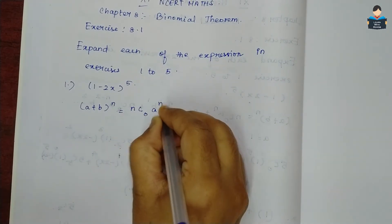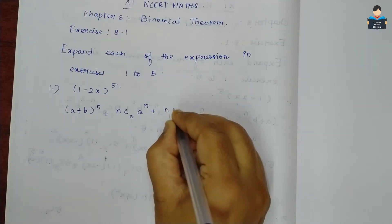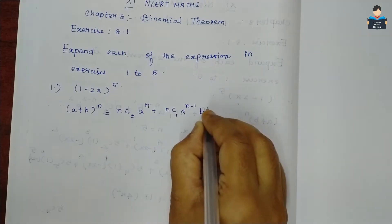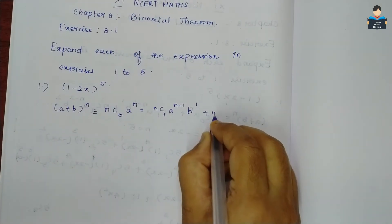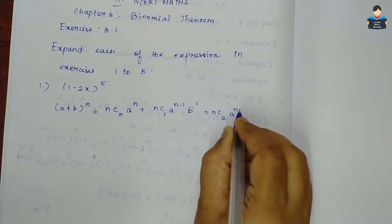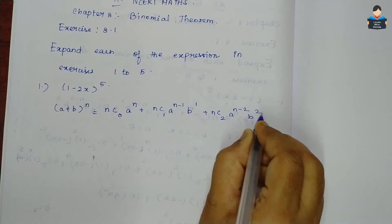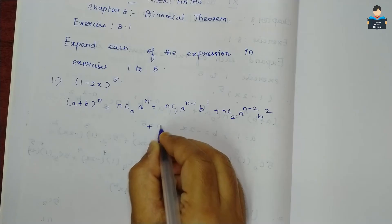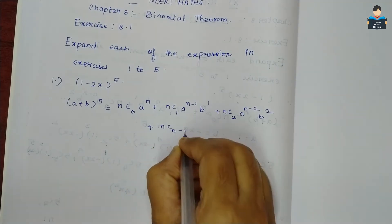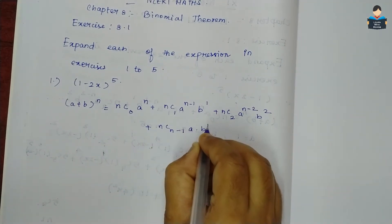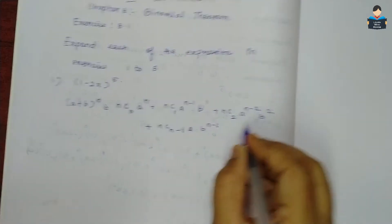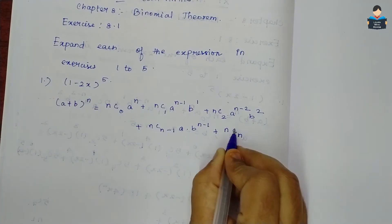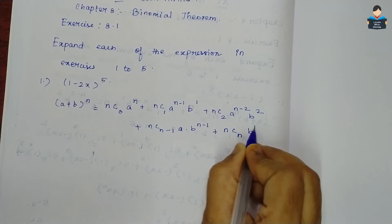The binomial expansion formula is: (a+b)^n = nC0·a^n + nC1·a^(n-1)·b^1 + nC2·a^(n-2)·b^2 + ... + nC(n-1)·a·b^(n-1) + nCn·b^n.